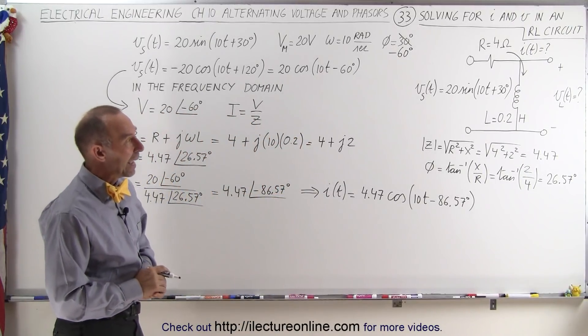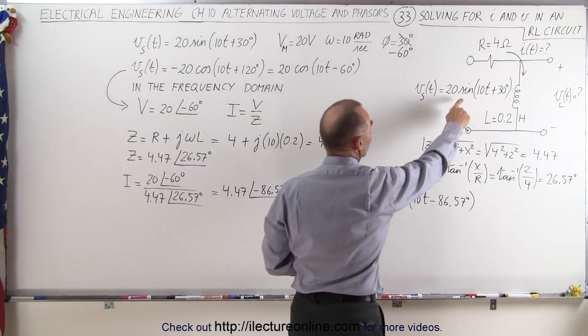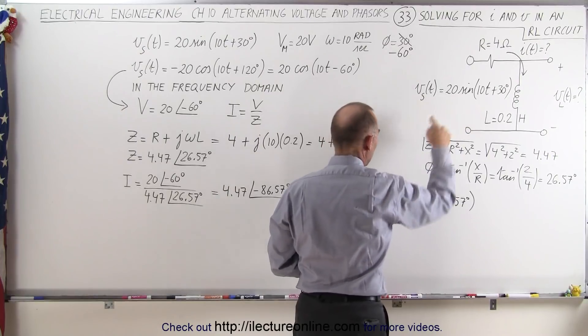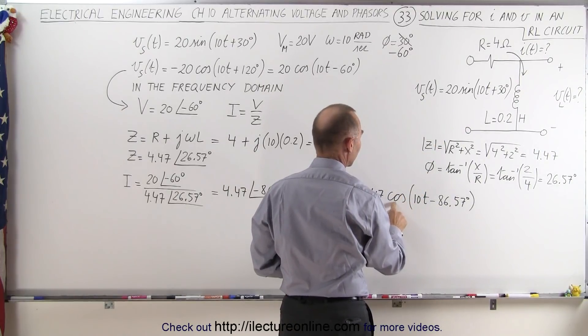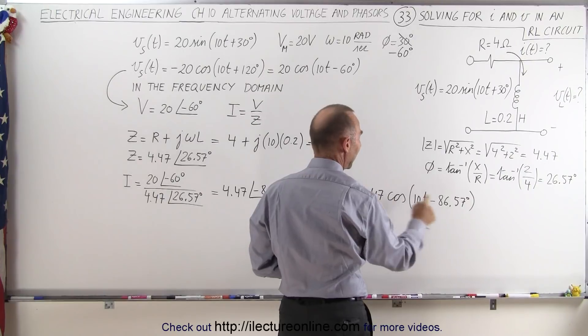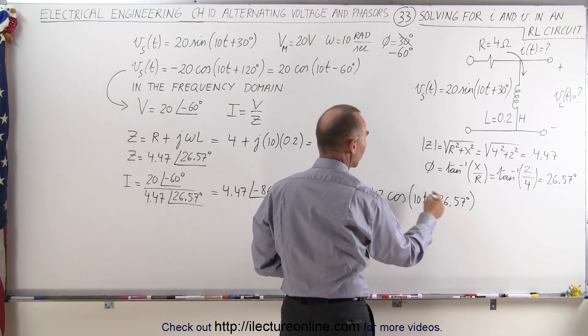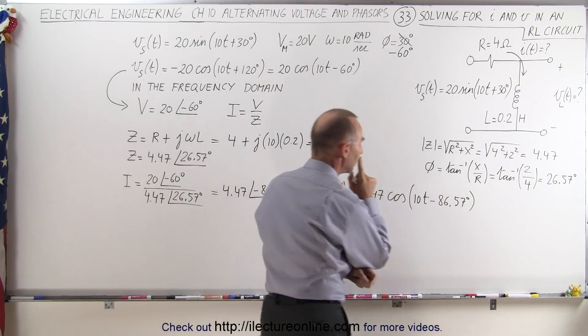Since we had the source voltage in terms of the sine, we may want to reconvert this to the sine. To go from the cosine to the sine, we subtract 90 degrees — but we can equivalently add 90 degrees after accounting for the sign change.